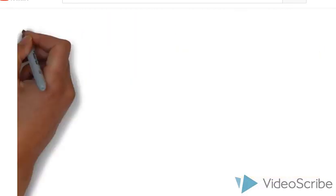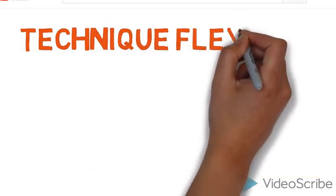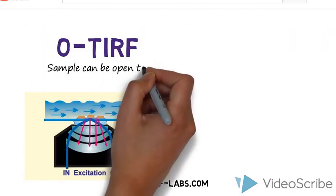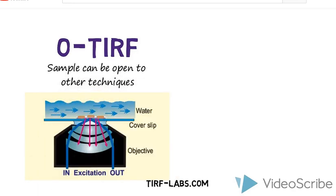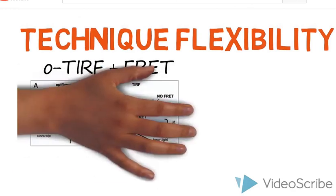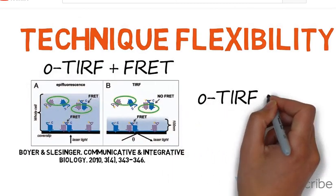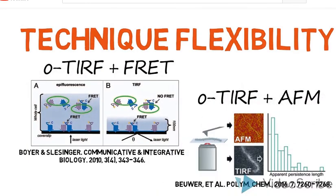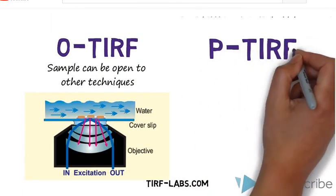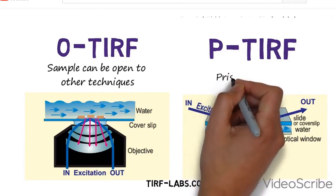Another fun thing about O-TIRF is that it is friendly with other analysis techniques. Because O-TIRF geometry is confined in the objective lens itself, resulting in free space on the stage, O-TIRF can be combined with other nanoscale imaging techniques. It has been shown to be used with fluorescence resonance energy transfer and atomic force microscopy. P-TIRF does not work well with these other techniques because the geometry is bulky.